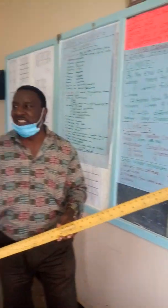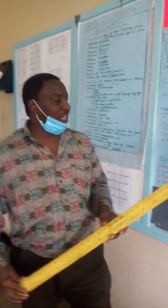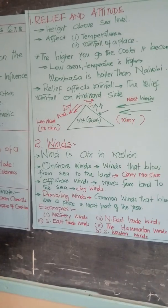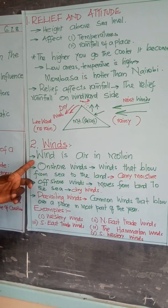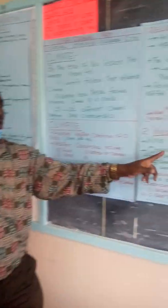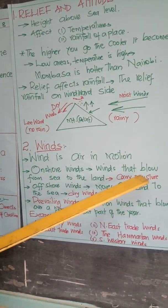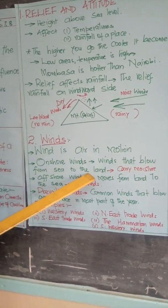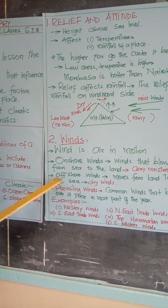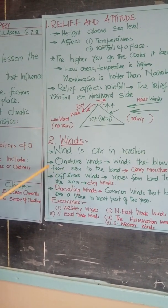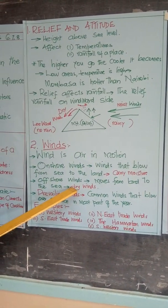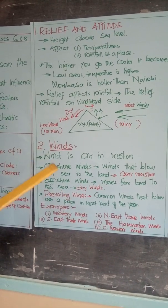The next factor that influences climate is winds. Wind is air in motion. We have different types of winds. First, onshore winds — winds that blow from the sea to the land. These carry moisture. Then we have offshore winds — winds that come from the land going to the water. They are dry because they have not originated from a place where there is water.